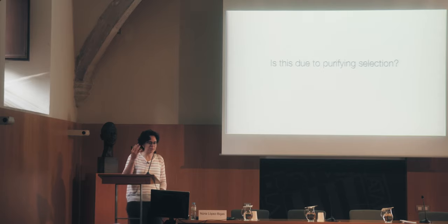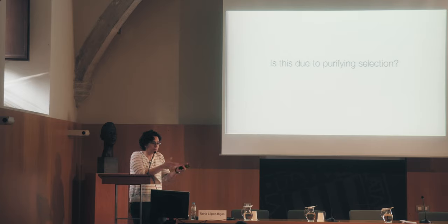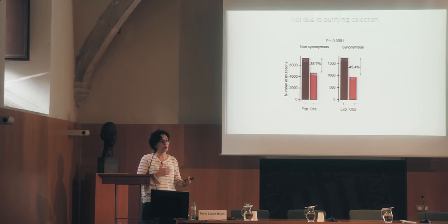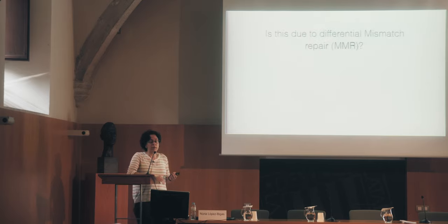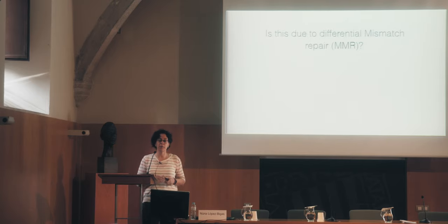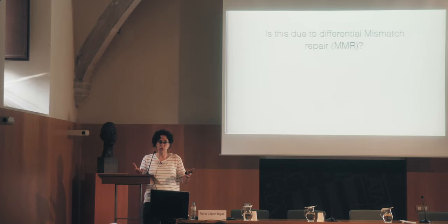We could think this is negative selection — because mutations in exons might make cells die and we don't see them. But the answer is this is not purifying selection. One way to see it is because this reduction is similar in the synonymous and in the non-synonymous side. So it has to be something else. These are colorectal polymerase epsilon tumors — they have mutations in the polymerase epsilon, which does a lot of mismatches. The important DNA repair pathway here is mismatch repair. Could mismatch repair be differentially active in exons compared to introns? That was our question.